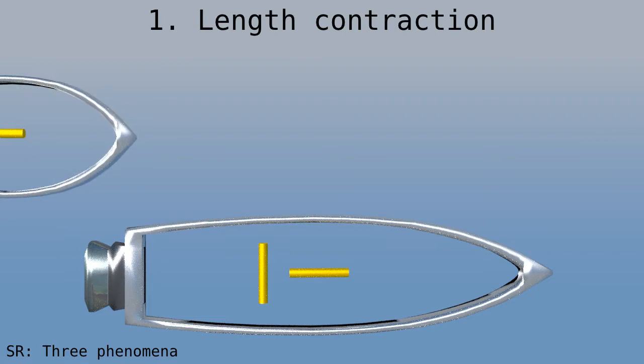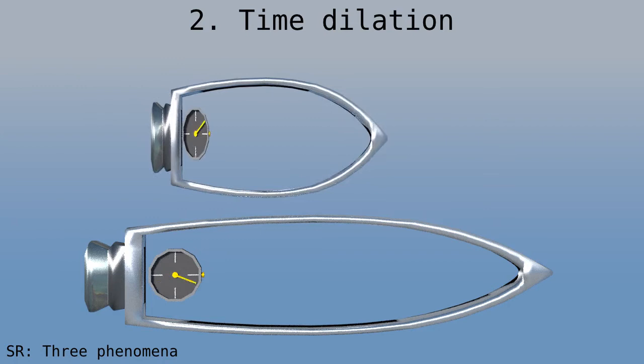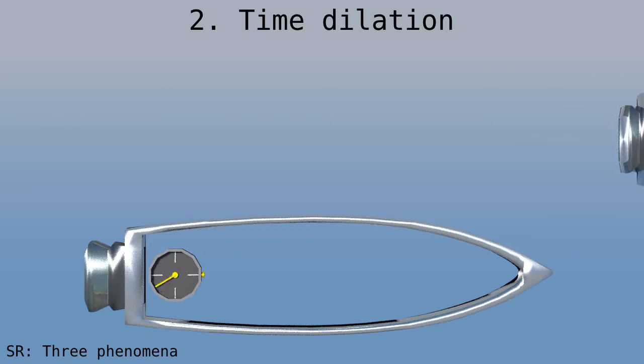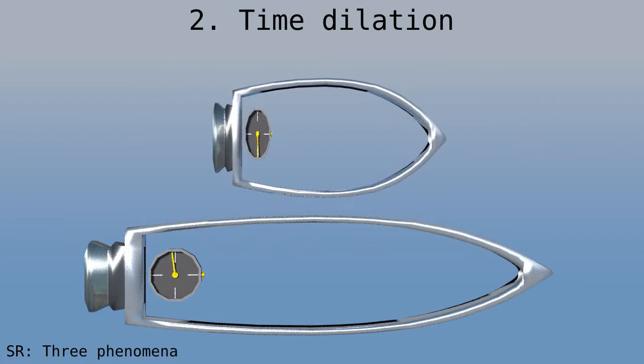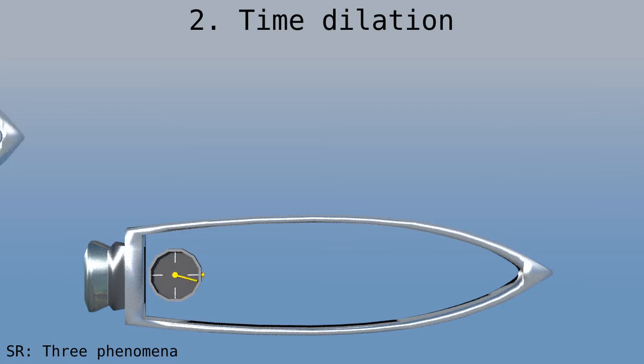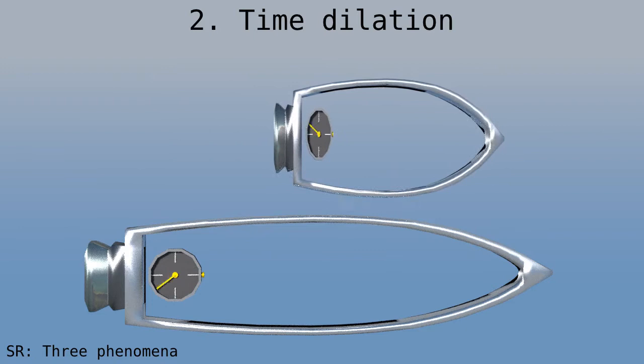The second phenomenon is time dilation. At high speed, objects move in slow motion. The clock on the moving spaceship runs at half speed compared to the clock at rest. This may be familiar from the twins paradox. If you fly to a different star and then return to Earth, you'll be younger than your twin who stayed at home. By the way, if you look at the clock hand, you'll notice the first effect, length contraction, when the clock hand is horizontal, but not when it's vertical.